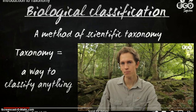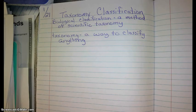We want to open our journal to page 52, and we are going to title this page Taxonomy Classification, and then we're going to define taxonomy. So on page 52, your title is Taxonomy Classification. We went ahead and defined biological classification as a method of scientific taxonomy, so then we need to define taxonomy.